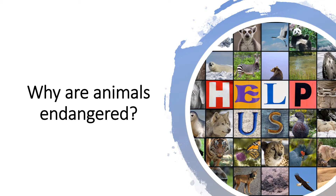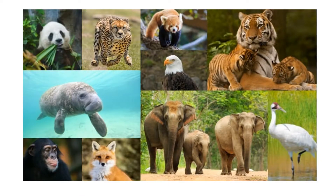Why are animals endangered? There are several reasons why animals are endangered. One of them is hunting — people hunt animals for pleasure or to satisfy their needs. Another reason is fires in the woods, and a third reason would be weather changes. To prevent animals from extinction, reproduction needs to progress at a faster rate than destruction.